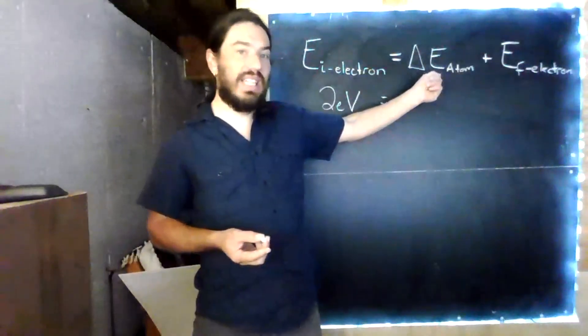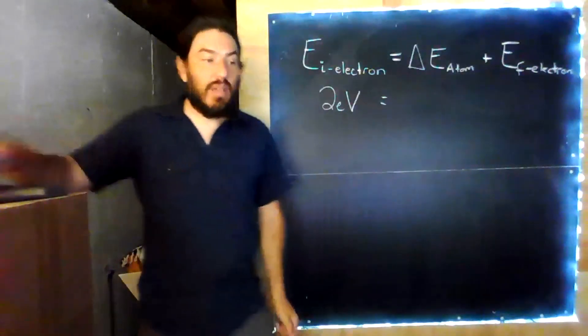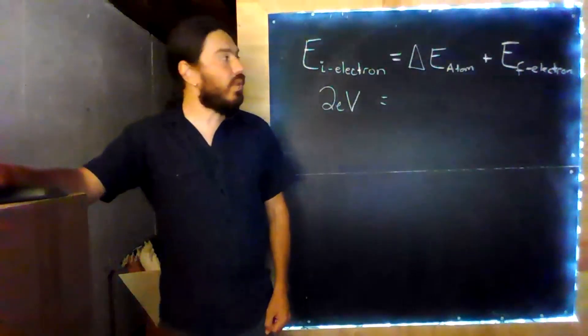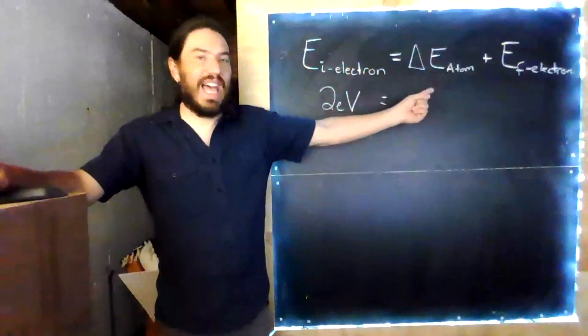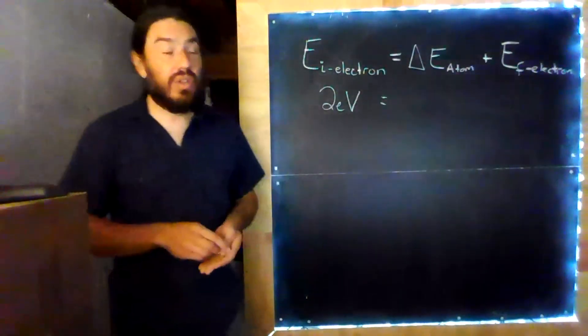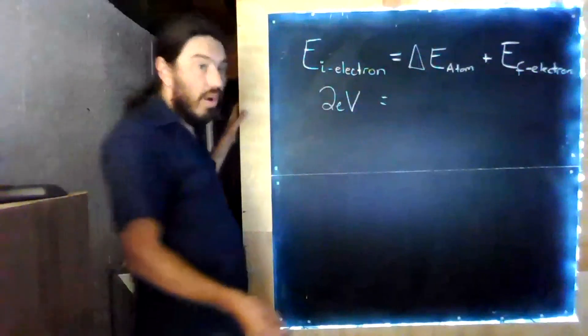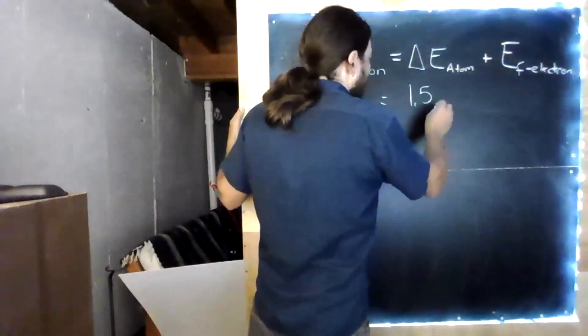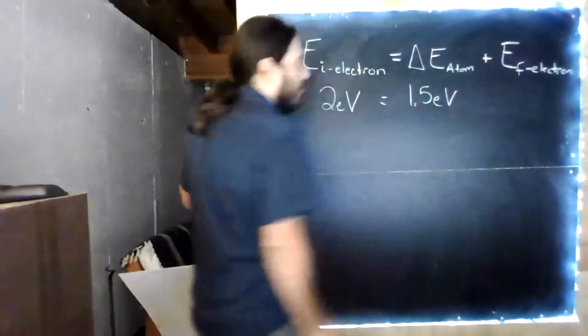Well, that means that delta E of the atom is the difference between the n equals 1 state and the n equals 2 state. In other words, there's no way for delta E of the atom to be 2 electron volts, because there is not an energy level at 2 electron volts. And so, the change in the energy of the atom must be 1.5 electron volts, because that's the only energy level that this atom can get to if it's given 2 electron volts.